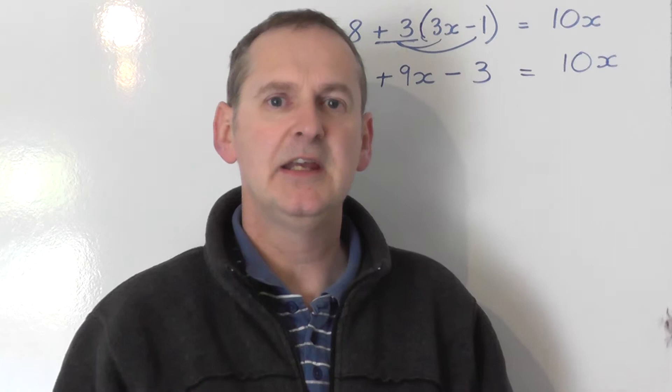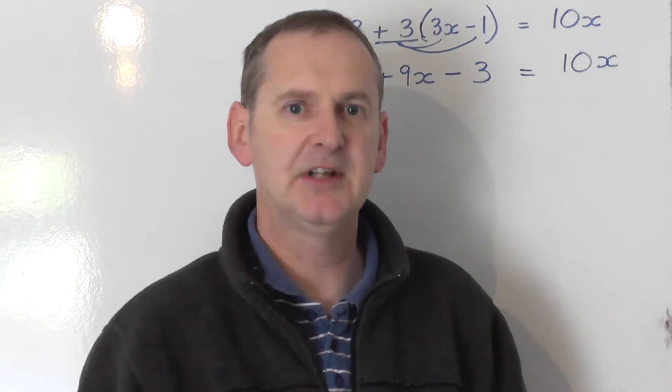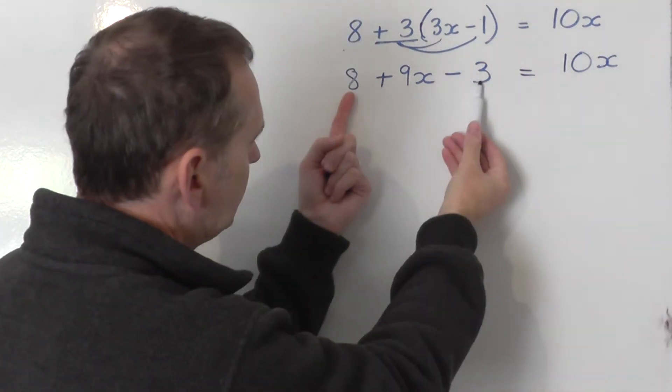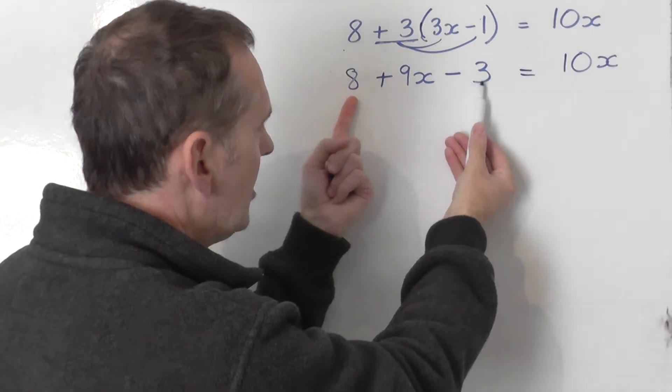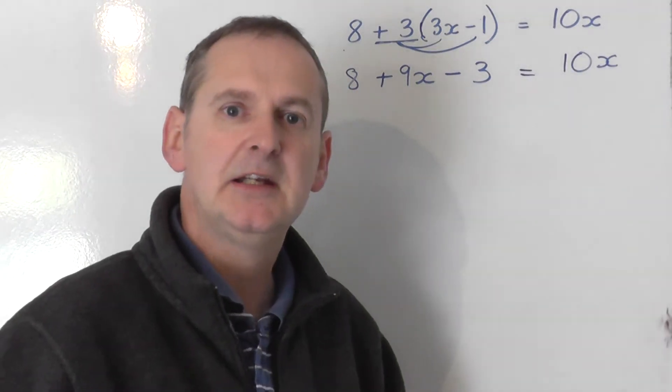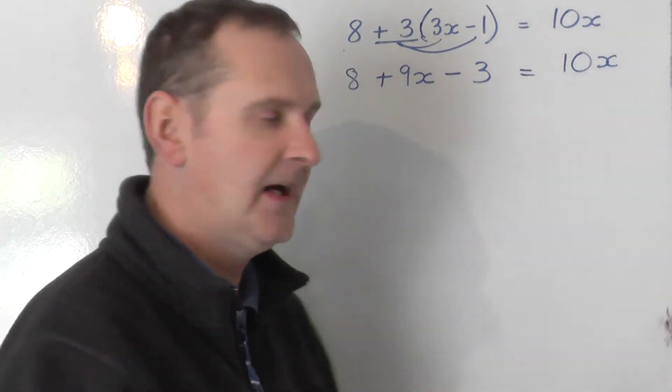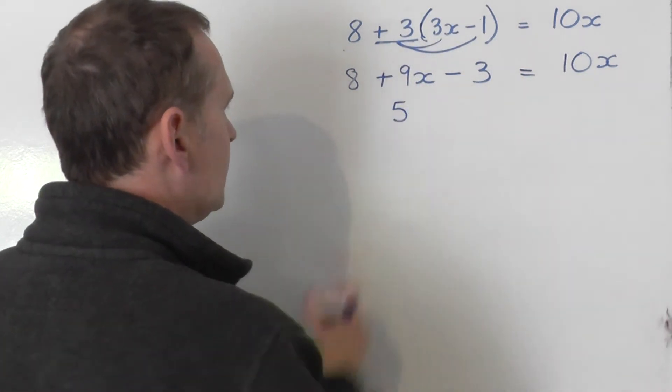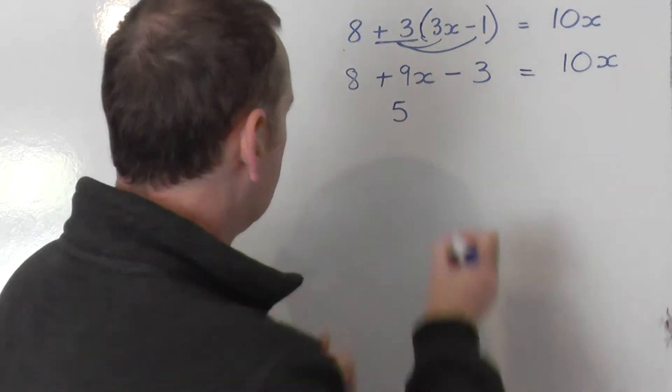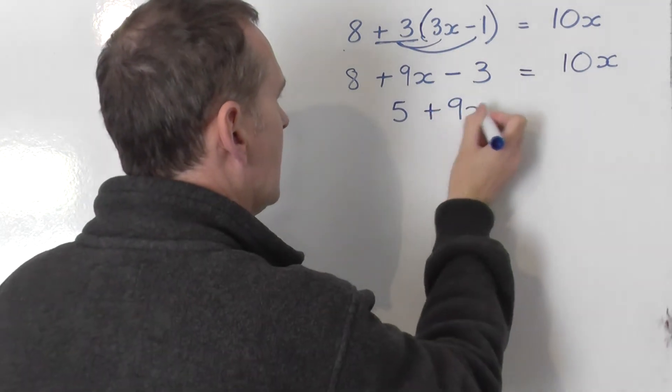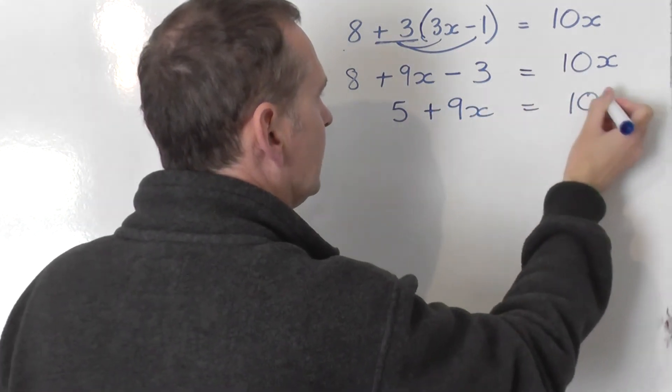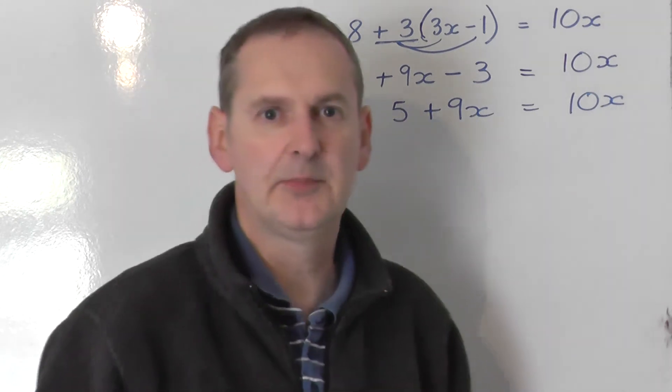What you need to do now is just tidy things up on the left hand side. Because on the left hand side you've got two numbers, the 8 and the minus 3, which can combine together. Now 8 minus 3 is 5. So those two numbers can go together to give 5. You've also got a plus 9x. And that is equal to 10x on the other side. So I've just tidied things up a little bit.